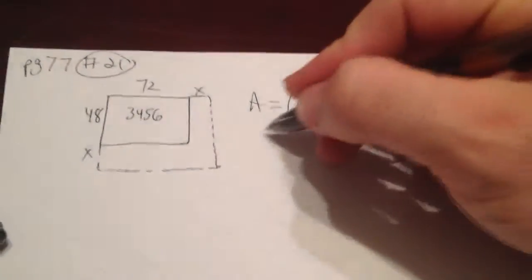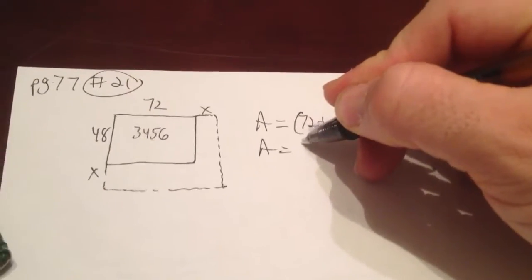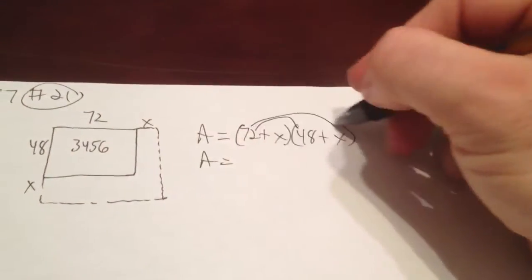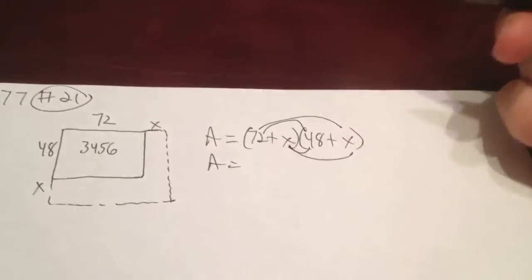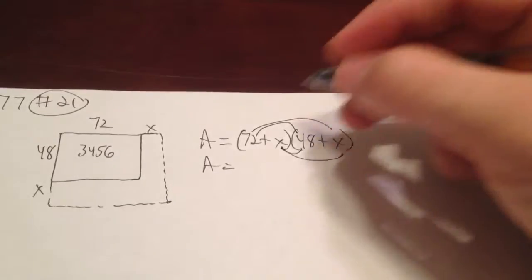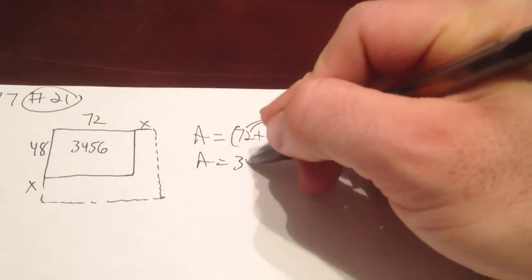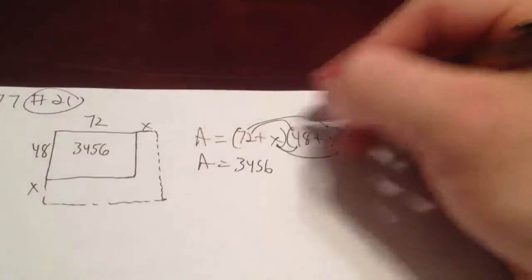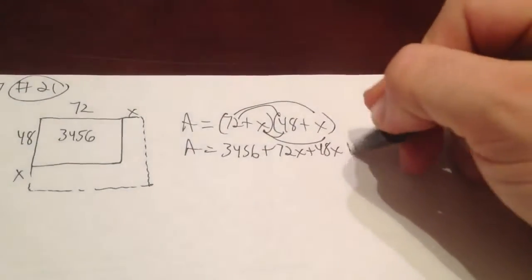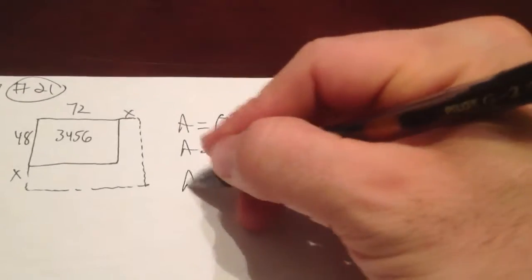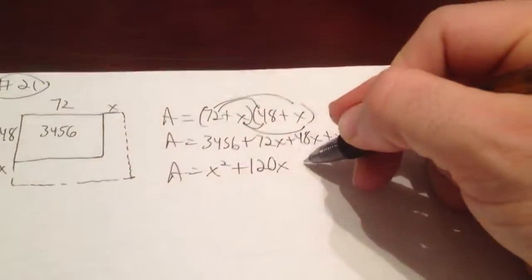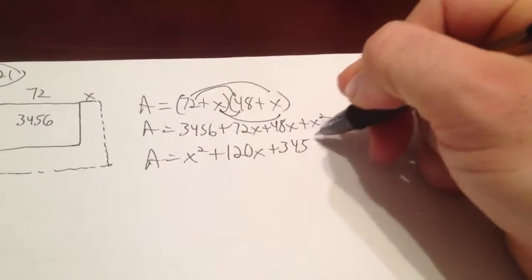And so you end up with this really beautiful, after you distribute this all together, this little beautiful formula of 72 times 48, which is 3,456, 72 times x, 48 times x, and then x times x, which is x squared. So you end up with x squared plus 120x plus 3,456.